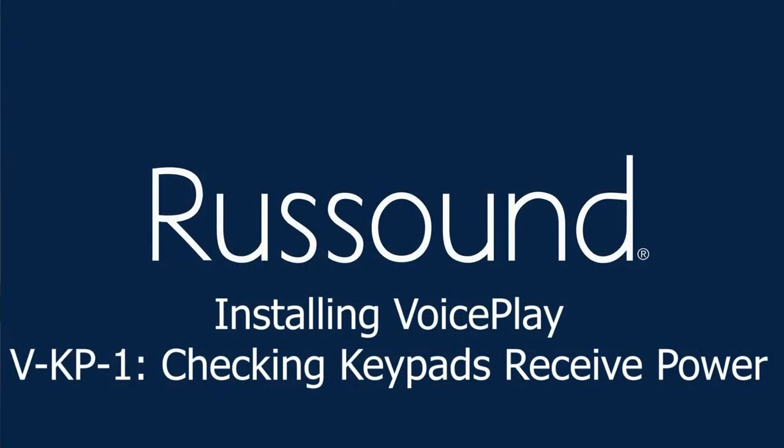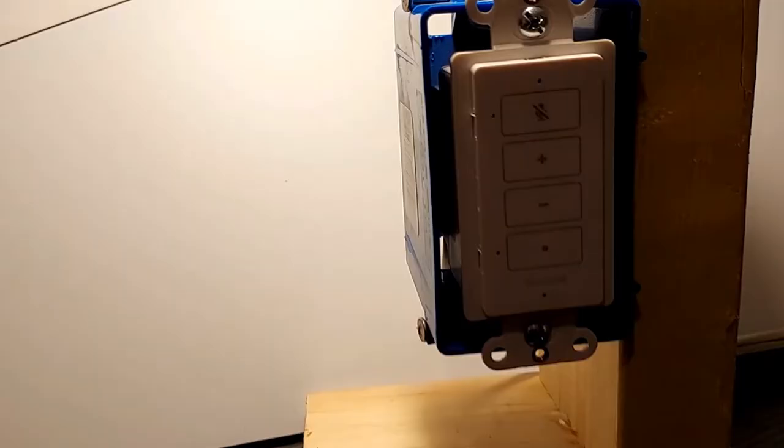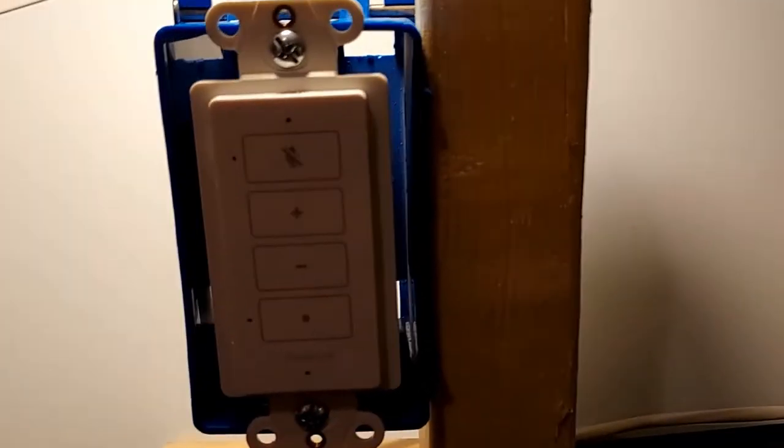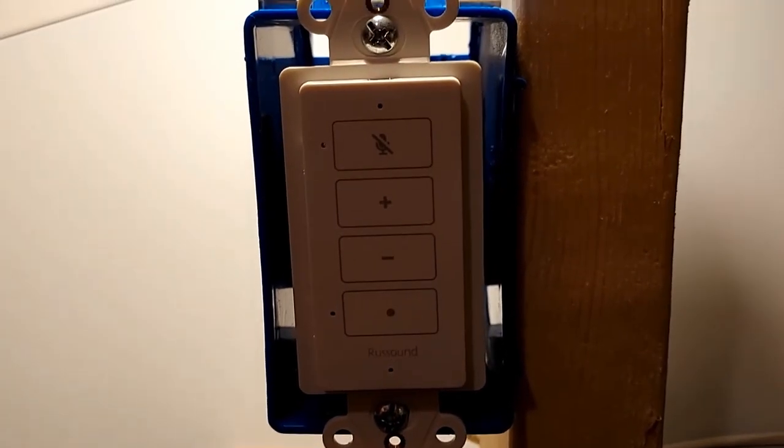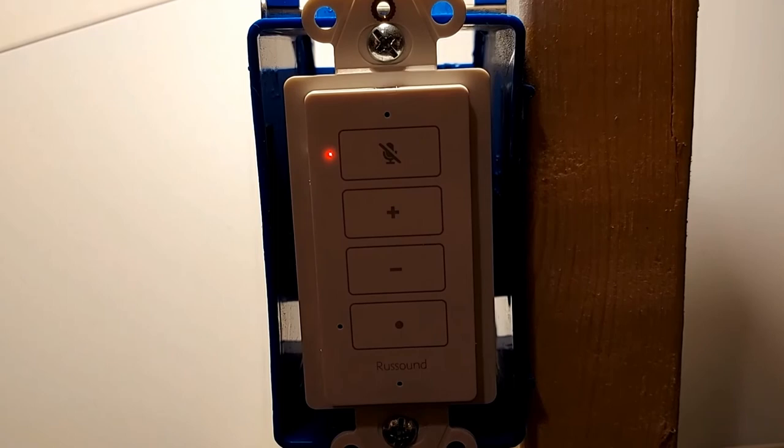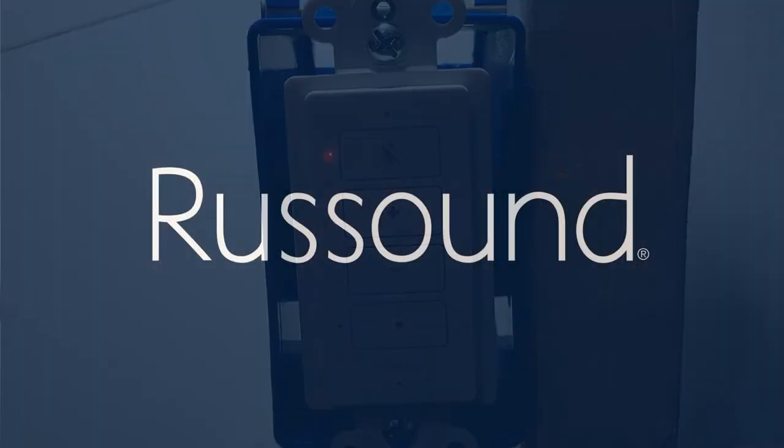Now that we've connected the power supply, let's go check on our VKP1 keypads and apply power. Power light turns on. Good, it's getting power. It's booting up, and the red indicator light showing that the Alexa microphone is disabled.